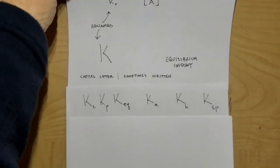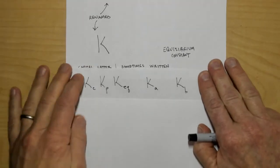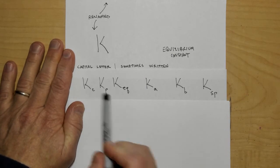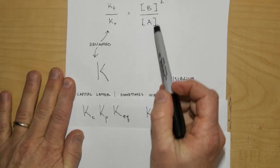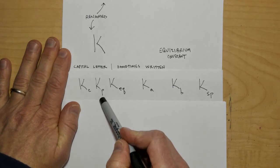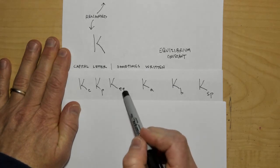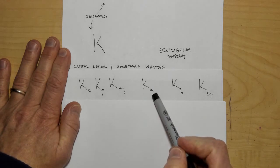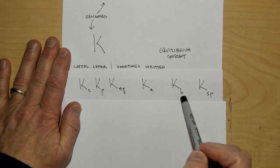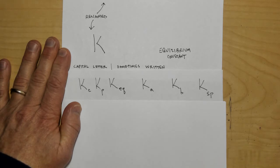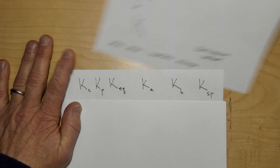You'll see it written as K with a small C (K_c) for concentration, K_p when written in terms of partial pressures, K_eq just meaning we're at equilibrium, K_a for the equilibrium of an acid, K_b for the equilibrium of a base, and K_sp — the solubility product — for things that are only partially soluble. Just get used to it: it's a capital K, and it always means the same thing.